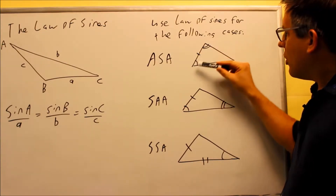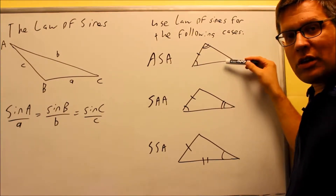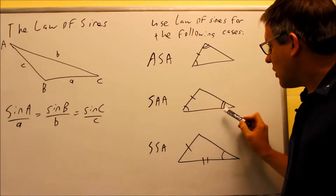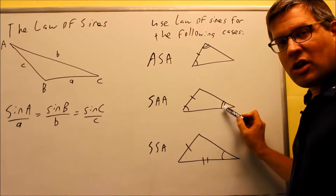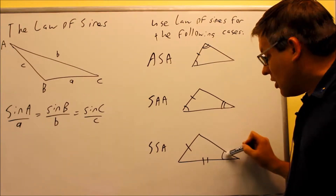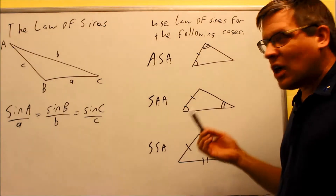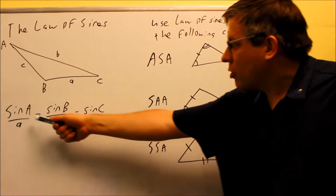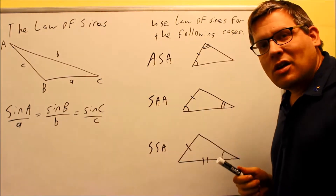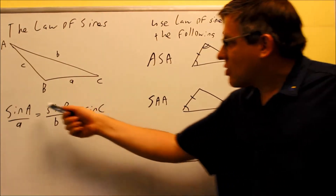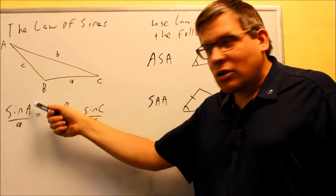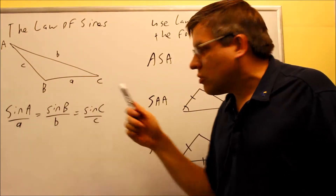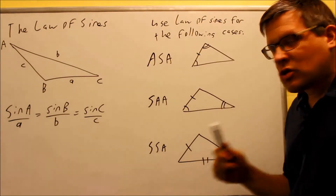For instance, if I know these two angles, I could find the third angle, and that is a given angle across from a given side. For side-angle-angle, you already have a side opposite a given angle. For the SSA case, you also have a side opposite the given angle. So in all three cases, as long as you have a side opposite a given angle, you can use the Law of Sines. The formula is basically a proportion: if you take sine of angle A divided by side A, and do this ratio for all three pairs, you'll find that all three ratios equal each other.